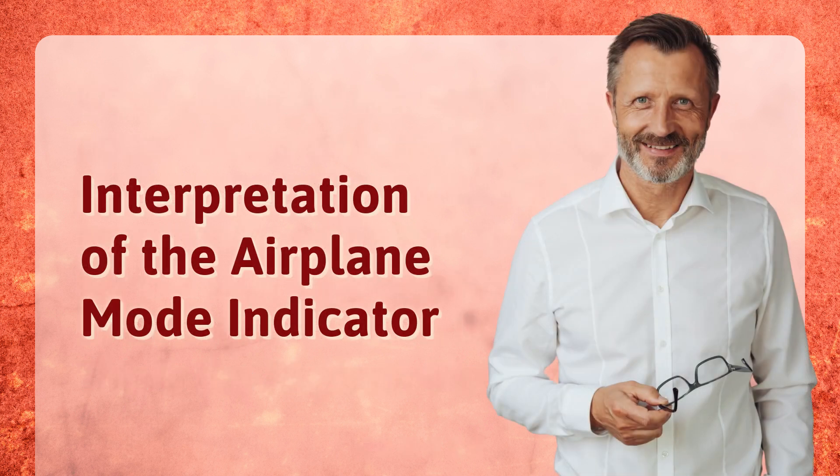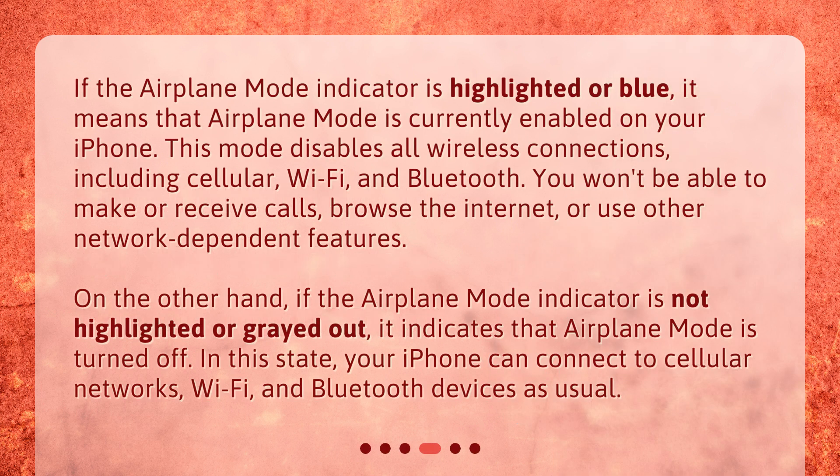Interpretation of the airplane mode indicator. If the airplane mode indicator is highlighted or blue, it means that airplane mode is currently enabled on your iPhone. This mode disables all wireless connections, including cellular, Wi-Fi, and Bluetooth. You won't be able to make or receive calls, browse the internet, or use other network-dependent features.